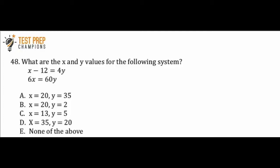What are the x and y values for the following system? x minus 12 equals 4y, 6x equals 60y, and we've got A, B, C, D, and E answer choices.